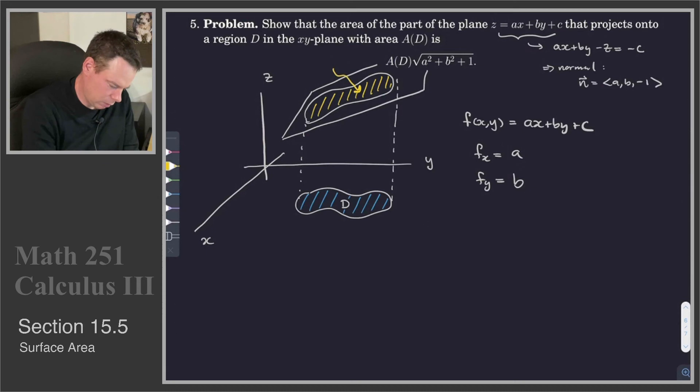So there's the region we are interested in. So we want to know what is A(R)? What is the area of that region R? Well, it is given by the integral over the region D of the square root of 1 plus f_x squared plus f_y squared dA.